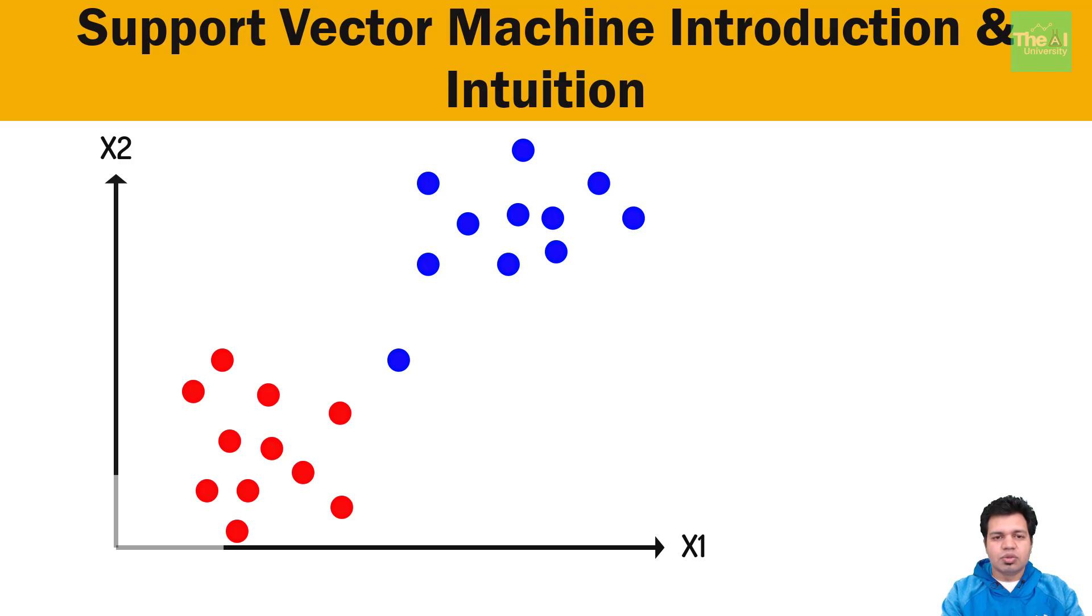One way is to drop a line here. Any data point which is lying on the left hand side is red and the data point lying on the right is blue.